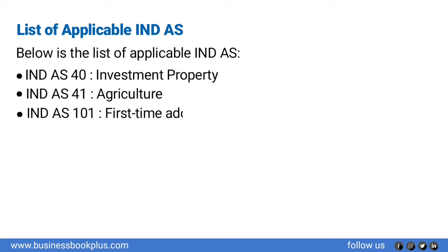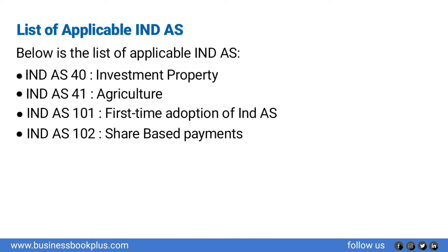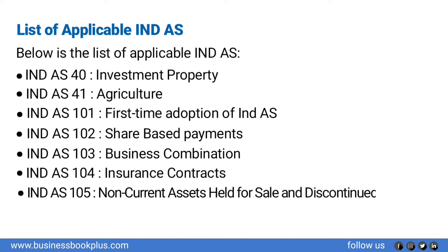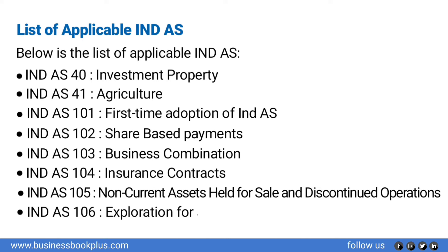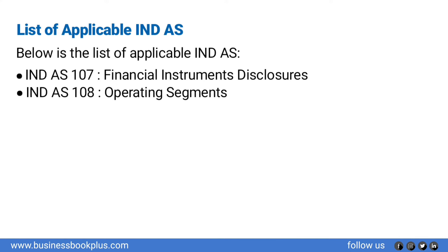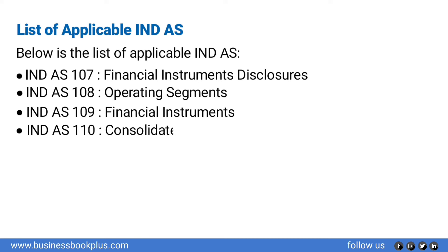Ind AS 101 — First Time Adoption of IND AS. Ind AS 102 — Share-Based Payments. Ind AS 103 — Business Combinations. Ind AS 104 — Insurance Contracts. Ind AS 105 — Non-Current Assets Held for Sale and Discontinued Operations. Ind AS 106 — Exploration for and Evaluation of Mineral Resources. Ind AS 107 — Financial Instruments: Disclosures. Ind AS 108 — Operating Segments. Ind AS 109 — Financial Instruments. Ind AS 110 — Consolidated Financial Statements. Ind AS 111 — Joint Arrangements.